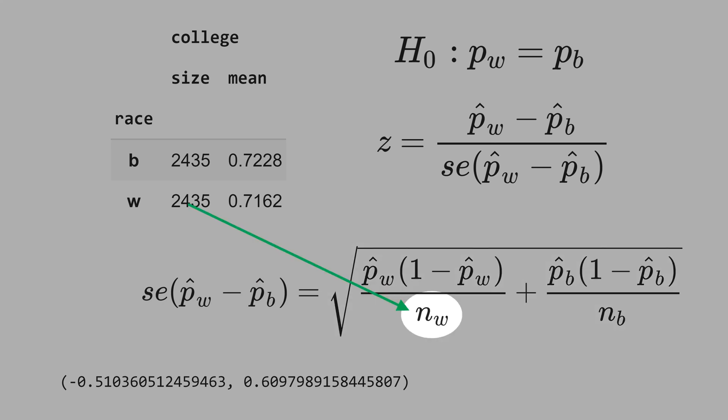The n_w is the number of observations of white people, and the n_b is the number of observations of black people. Note that this is the variance of white people, and this is the variance of black people. You don't see a covariance factor. That means you are assuming that black and white are independent samples.